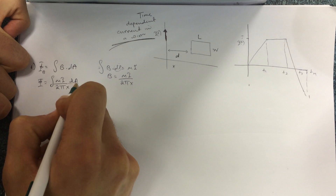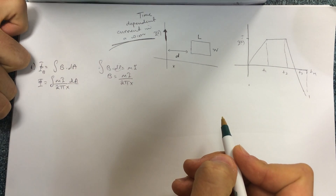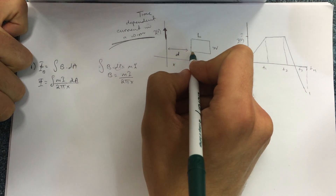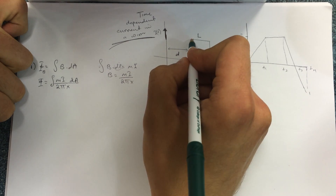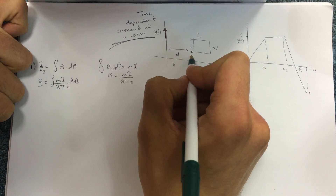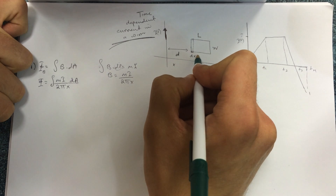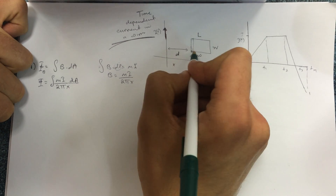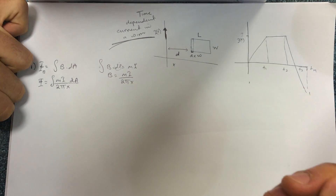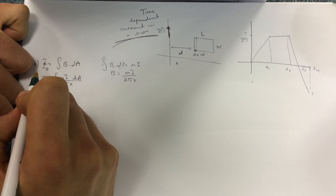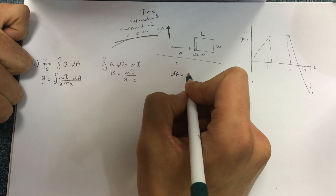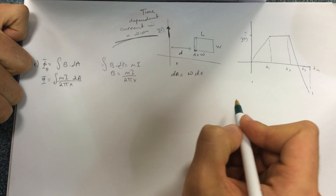We need to change dA in terms of x, because it's easier. A small element dA is the same as dx times the width W. So we can substitute dA = W · dx.